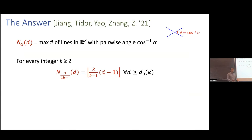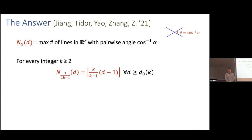Let me state the theorem. Given alpha, I want to know the maximum number of lines in d dimensions with pairwise angle arccos(alpha). When alpha is 1 over an odd integer, the answer takes a particularly simple form given by an explicit formula when the dimension is large. This agrees with the earlier results. You need d to be large — for unrestricted angles the growth rate can be quadratic. Our proof requires d to be roughly doubly exponential in k, though we believe conjecturally the bound should kick in when d is roughly polynomial in k.